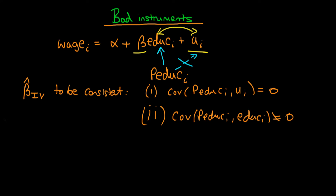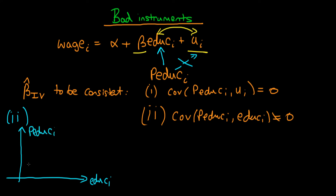Let's think about both assumptions in turn — I'll do them in reverse order. The second condition: is there likely a covariance between an individual's level of education and their parents' level of education? I think there is likely a positive correlation, because parents might teach their children to read and write, provide motivation for obtaining more education, and tend to place more value on education. So it's likely that the second condition is upheld — there's definitely some correlation between these two things in the population.